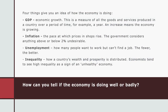The next box asks you to identify how you can tell if the economy is doing well or badly. There are four things to look at. The first is GDP — Gross Domestic Product — which is the measure of all goods and services produced in a country over a period of time, for example a year. An increase in that generally means the economy is growing. If you've got more people and companies making things and more services going out there, that is a sign of economic growth.